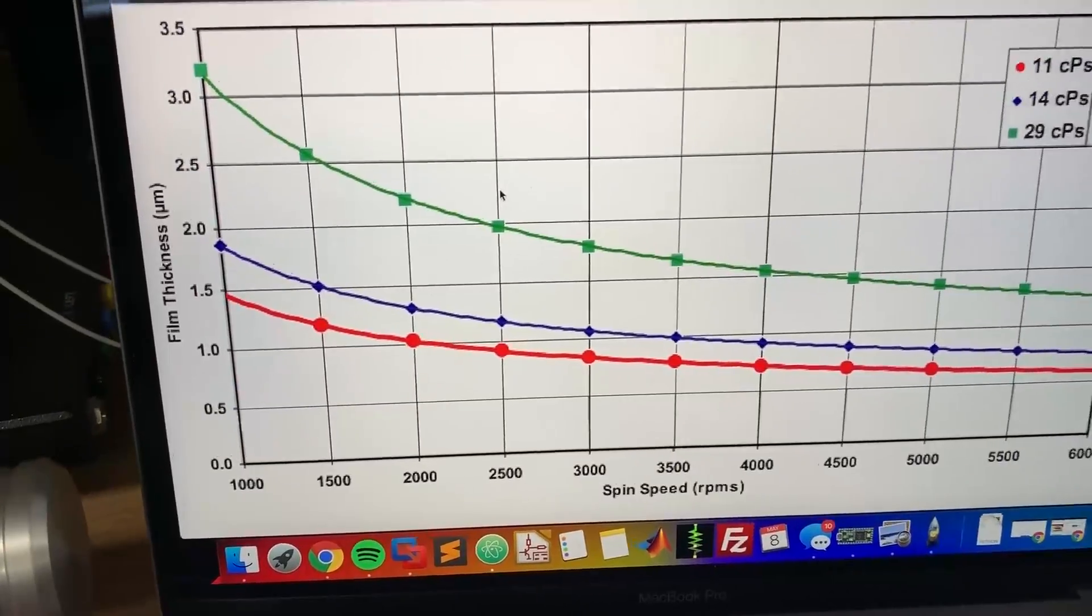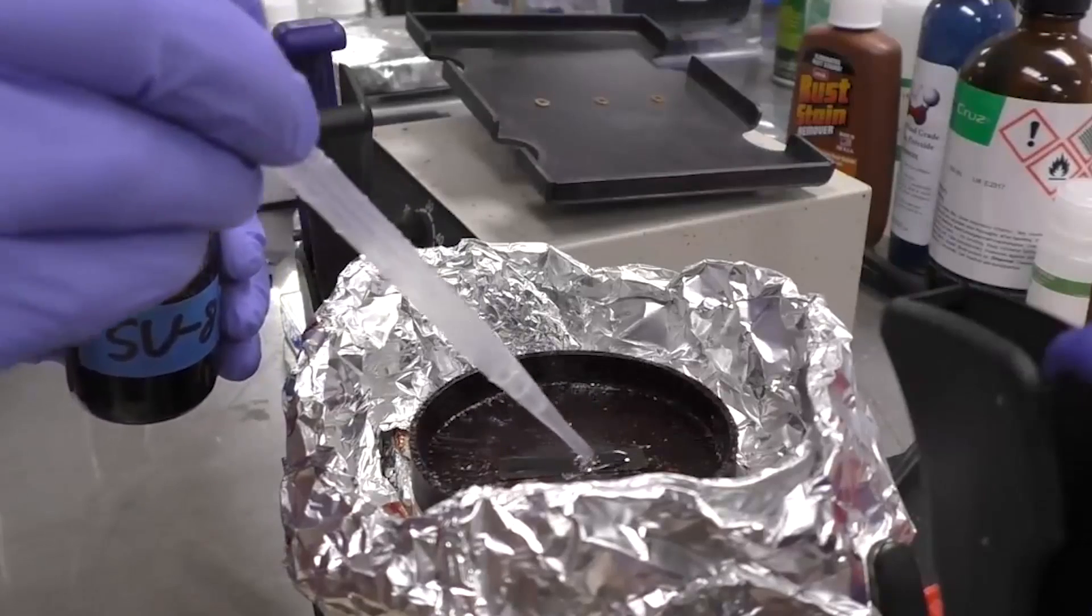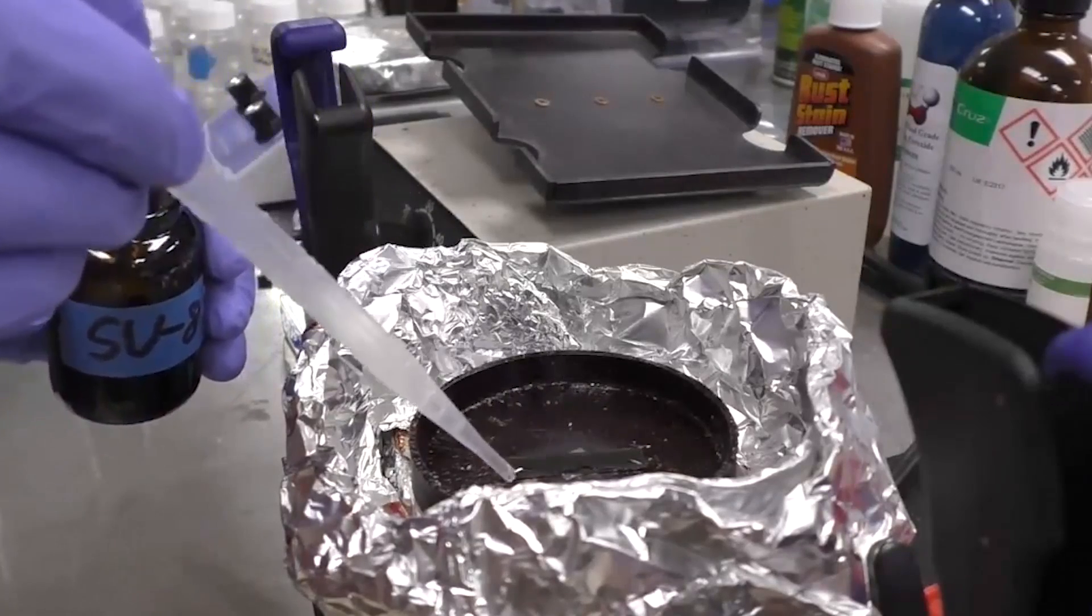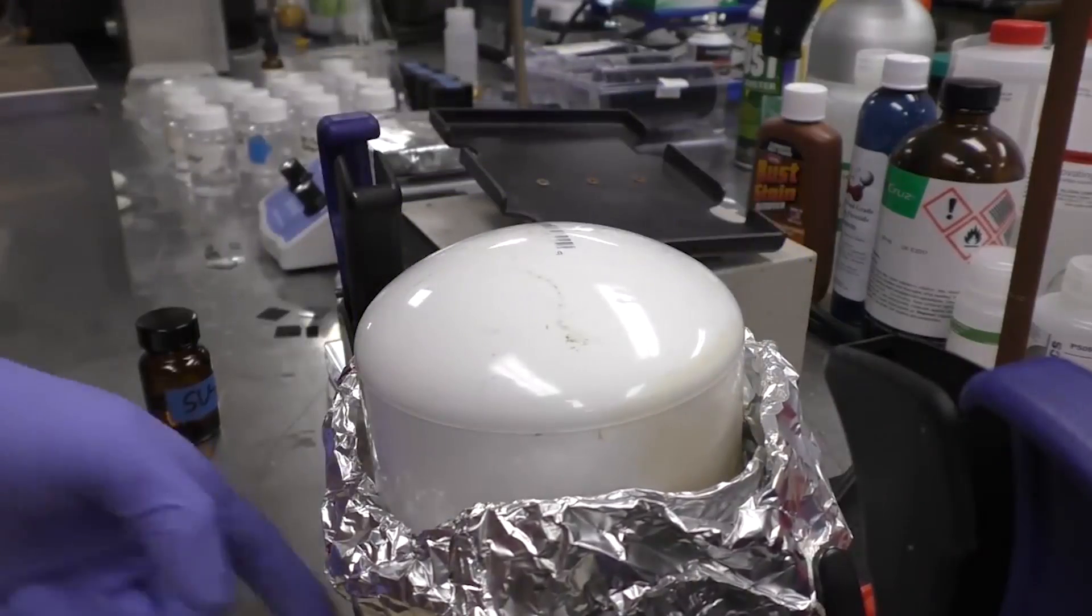The photoresist was spin coated and it's a pretty easy way of getting a calibration standard with a liquid of known viscosity. If you spin it onto the wafer at a known rpm then you should get a pretty repeatable thickness.